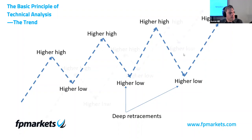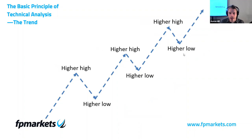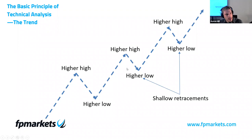On the other side of the coin, an uptrend with shallow retracements shows buyers are effectively in the driving seat — they're in control and not really allowing sellers to get much action. But again, there is never any guarantee buyers will continue to climb; it's just one part of the technical puzzle we can use to help make informed decisions.